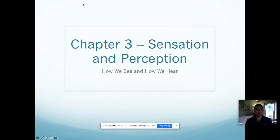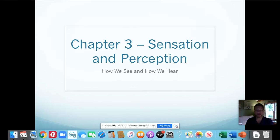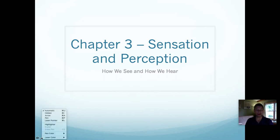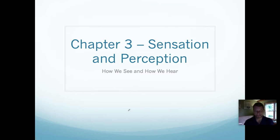Good morning, and welcome to the first of two videos on the second section of Chapter 3. Chapter 3 is all about how we perceive the world around us — sensation and perception — and it deals with the nervous system and all of our senses. This second section is entitled 'How We See and How We Hear,' and arguably these are the two most important senses we have for gathering information about the world around us.